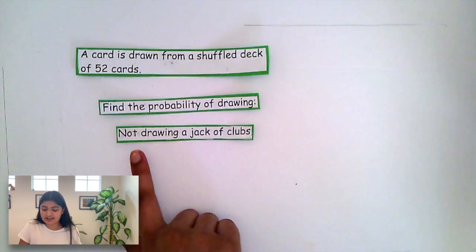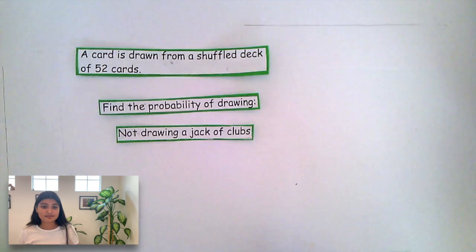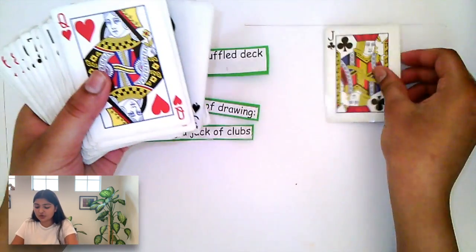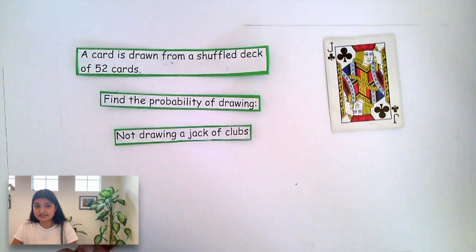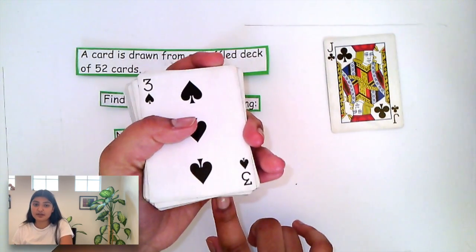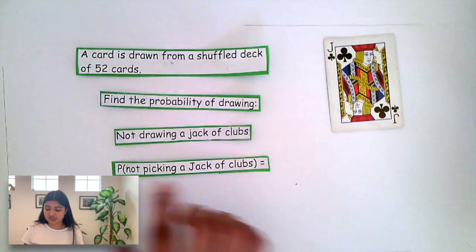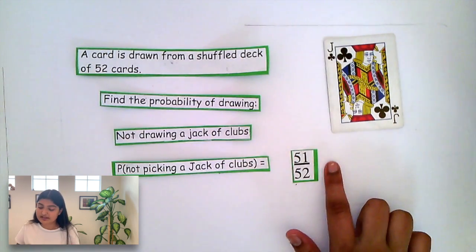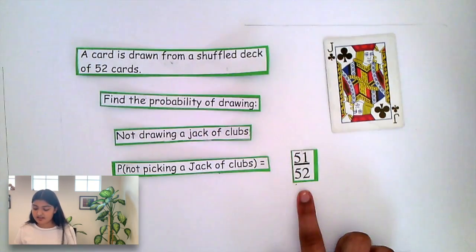Now, what's the probability of not drawing a card? In this case, we are not drawing a jack of clubs. As we shuffle through our deck, we can see that there is only 1 jack of clubs. As there is only 1 jack of clubs and we want to find the probability of not drawing it, we would have to pick one of the other 51 cards, excluding the jack of clubs. So we know that the probability of not picking a jack of clubs is 51 out of 52. Remember, the number of favorable chances would be any card excluding the jack of clubs, which is 51 out of a total of 52 cards.